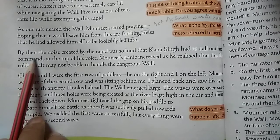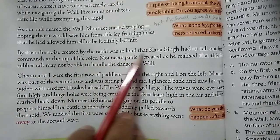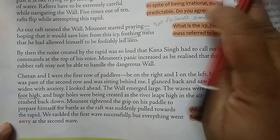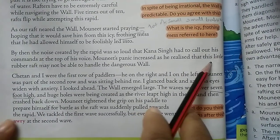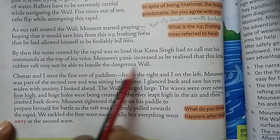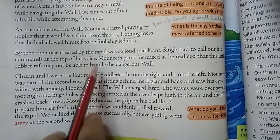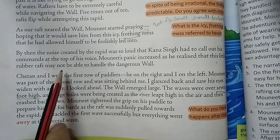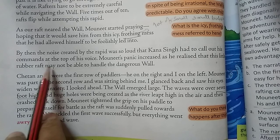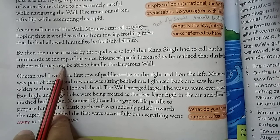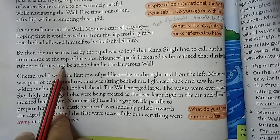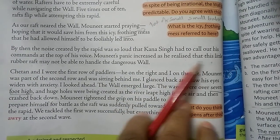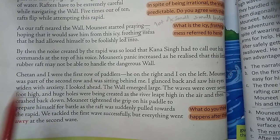By then, the noise created by the rapid was so loud that Kana Singh had to call out his commands at the top of his voice. Maunit's panic increased as he realized that this little rubber raft may not be able to handle the dangerous wall. He was not paying attention to commands — instead, he started panicking.